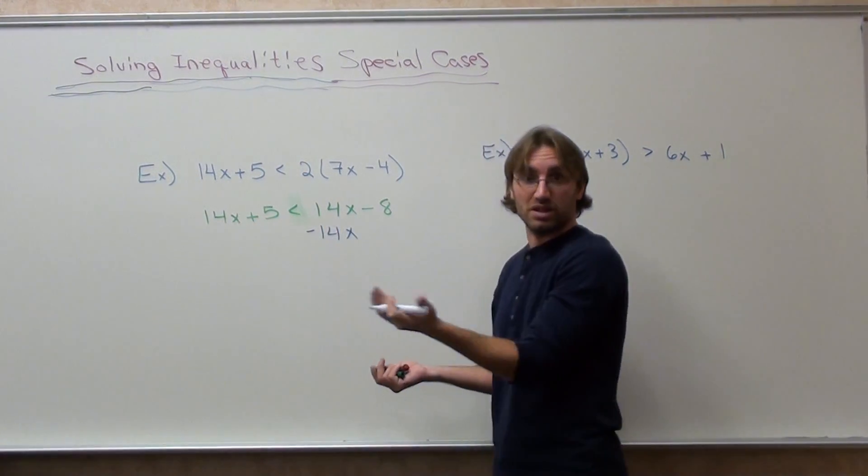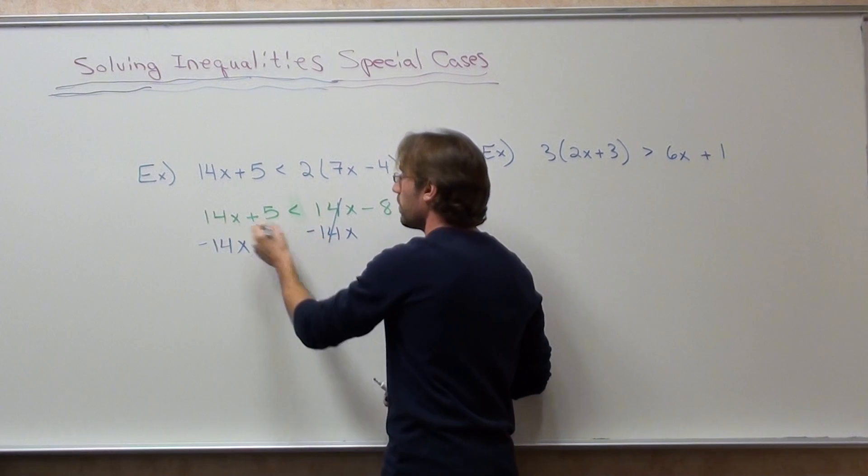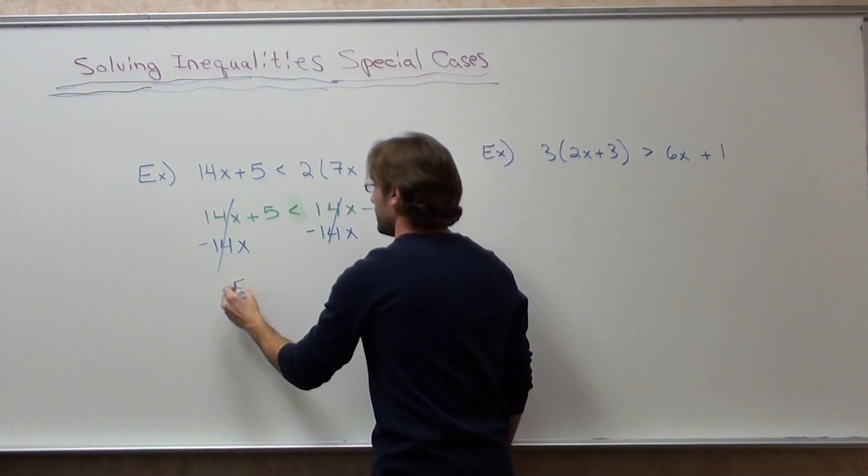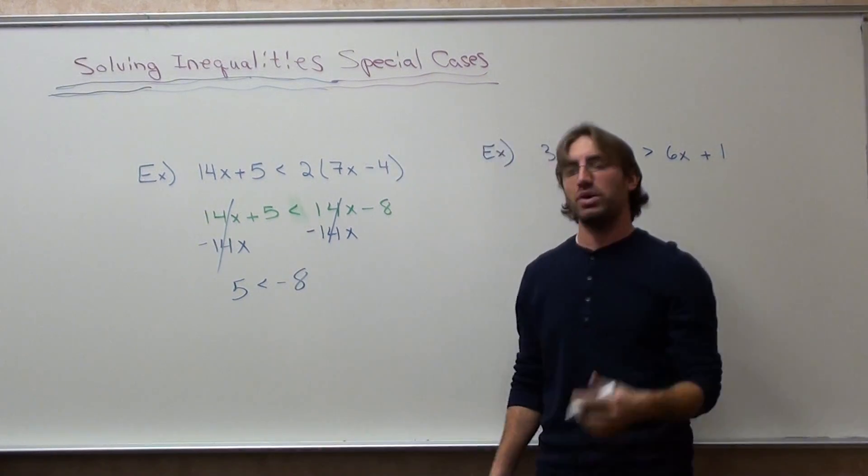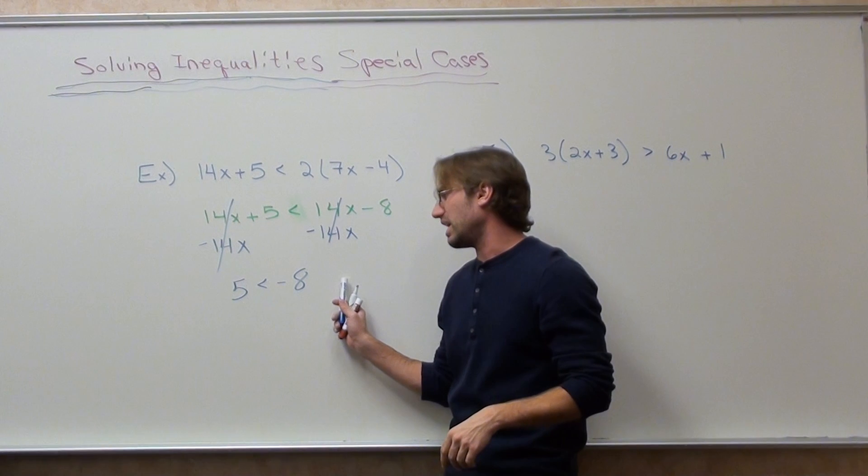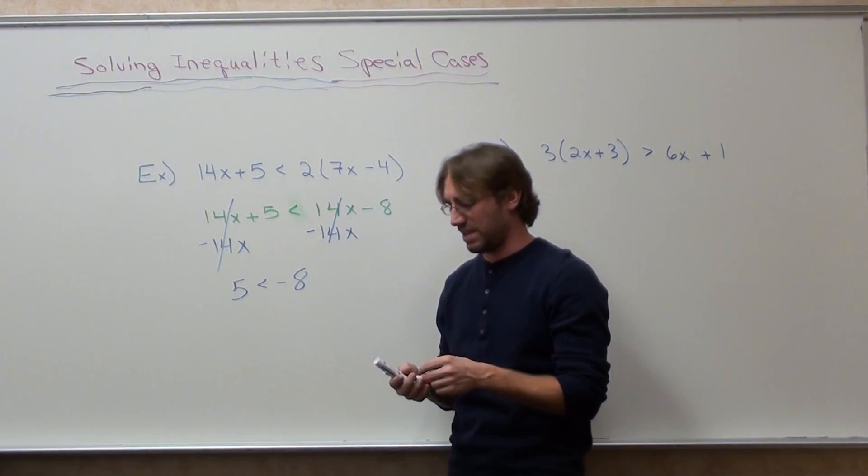Because I can't combine like terms on either side. Uh-oh. 5 is less than negative 8. We've encountered this before with equations. I mean, you could subtract 5 on both sides, or you can add 8 to both sides. It doesn't matter. It's going to still be the same outcome.